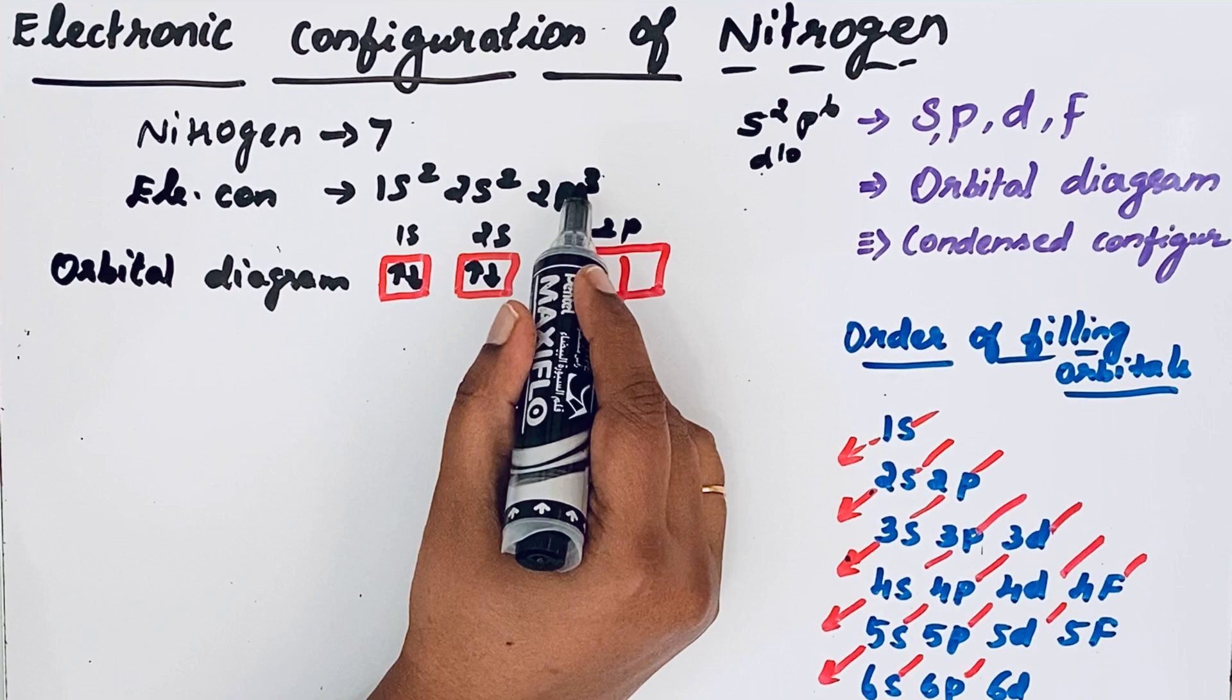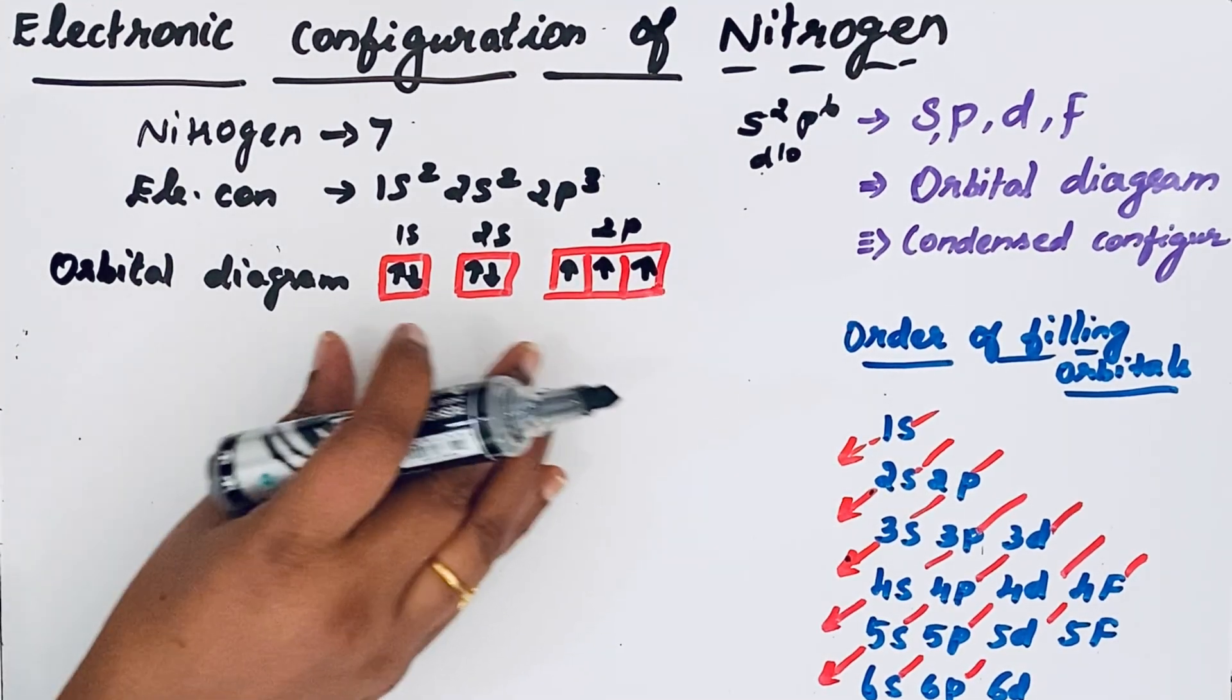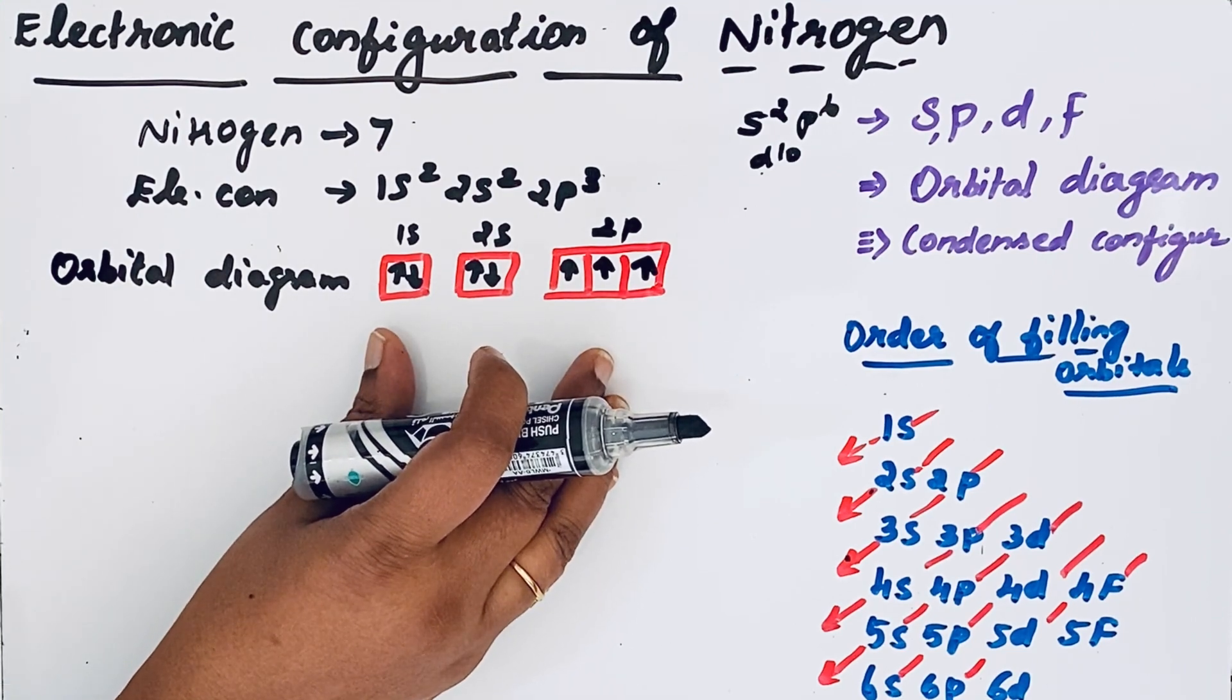In 2p orbital only 3 electrons. So 1, 2, 3. This is the orbital diagram for nitrogen.